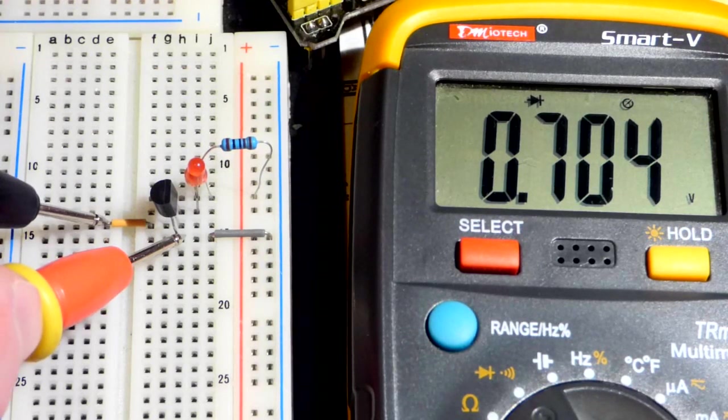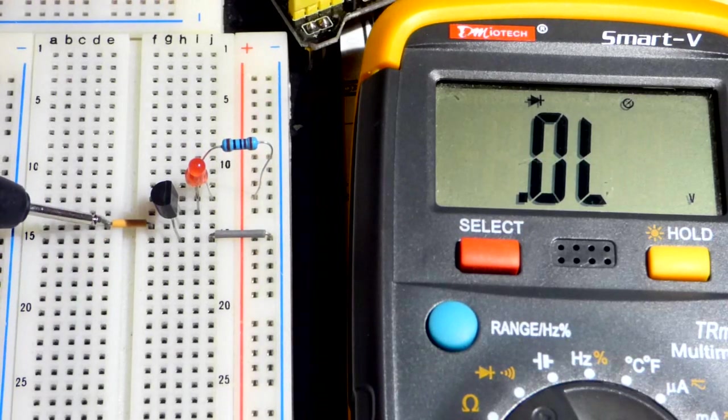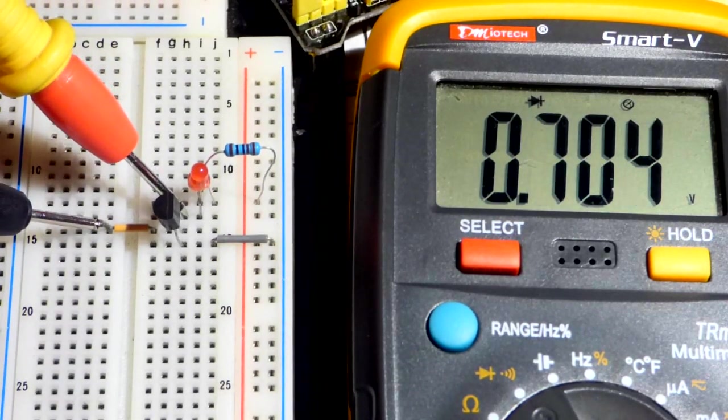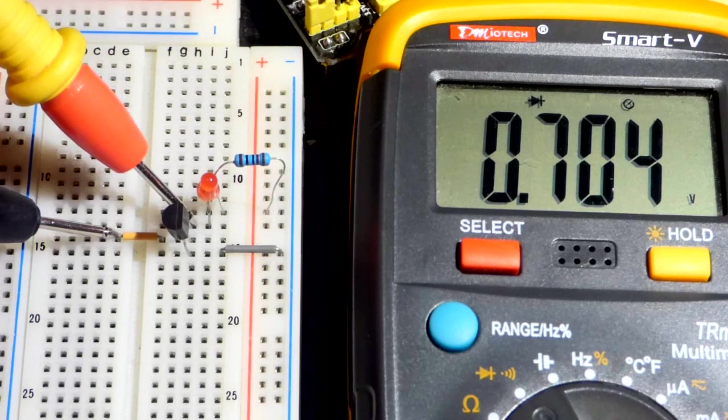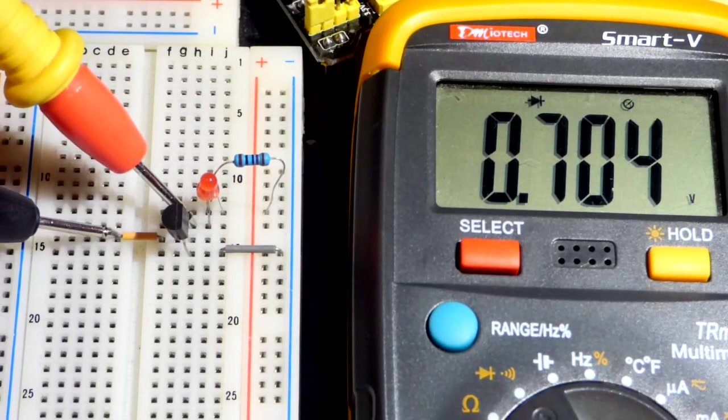So, this is the forward voltage that we have right there. And again, I can go up to here. And it should be about the same. It might be slightly different. But the N-type material should be about halfway down the P-type.